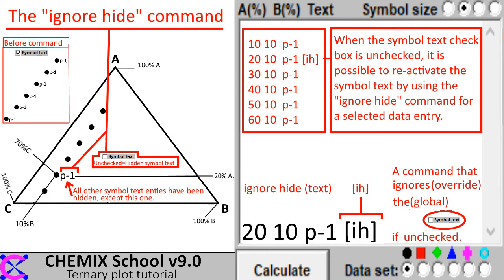When the symbol text check box is unchecked, it means that all the symbol text is to be hidden. It is possible to override this global event by inserting an ignore-hide command after the text.